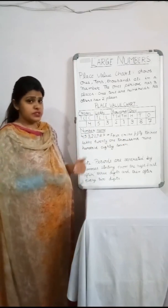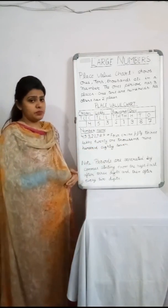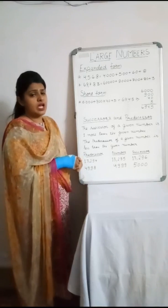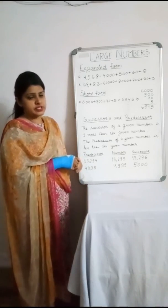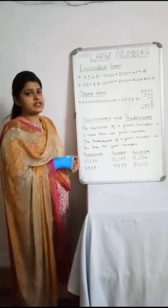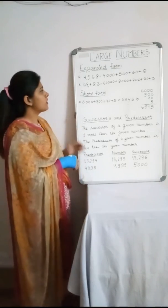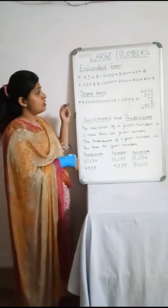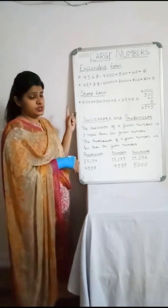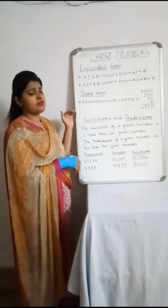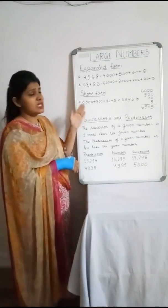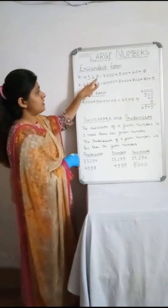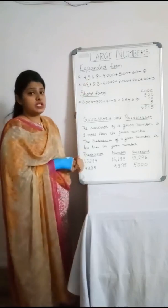Now we move on to expanded form. How to write the expansion of numbers? Let's take an example: 4,568. We take each digit and write the number of zeros after it, determined by how many digits follow that digit.